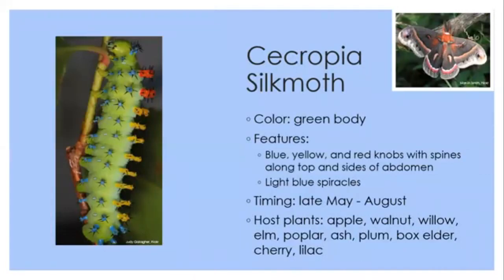Cecropia silk moth caterpillars are again a green-bodied three to four inch full-grown caterpillar, but with a very distinctive pattern: blue, yellow, and red knobs with black spines. The red knobs are on the second and third thorax segments, yellow on the tops of the abdomen, and blue mostly on the sides. There are also light blue spiracles. Late May through August, you can find them on many different fruit trees and various other species.